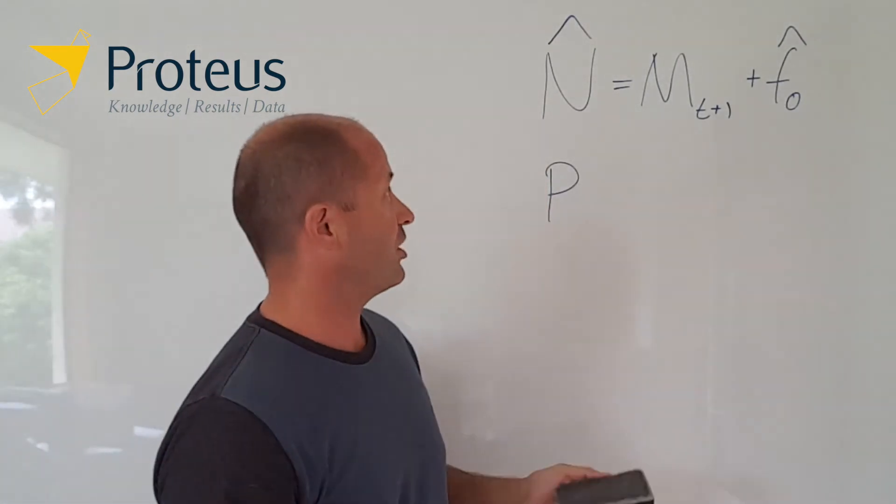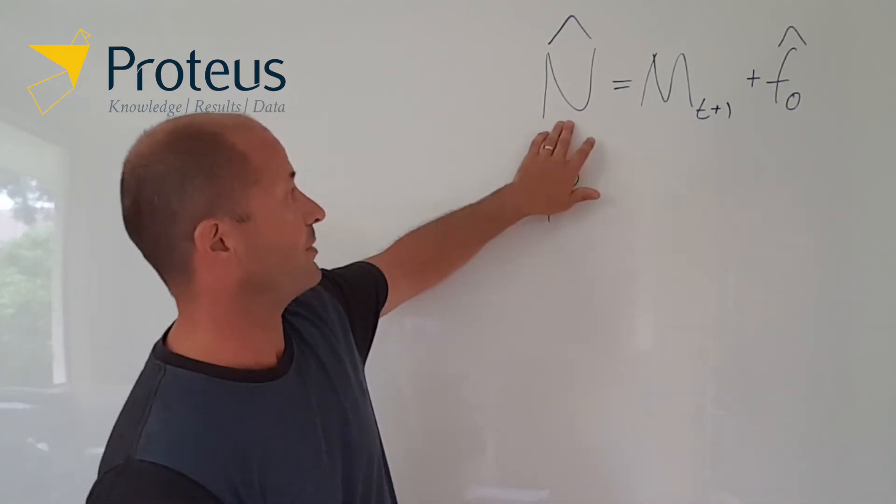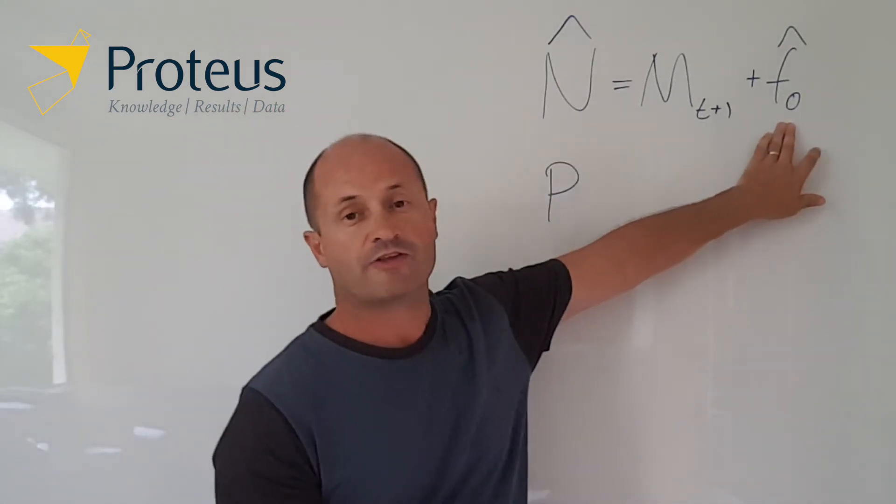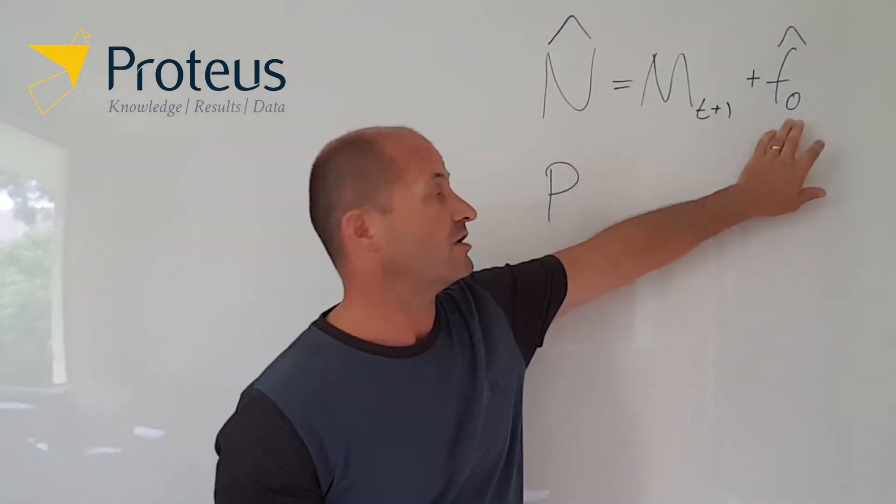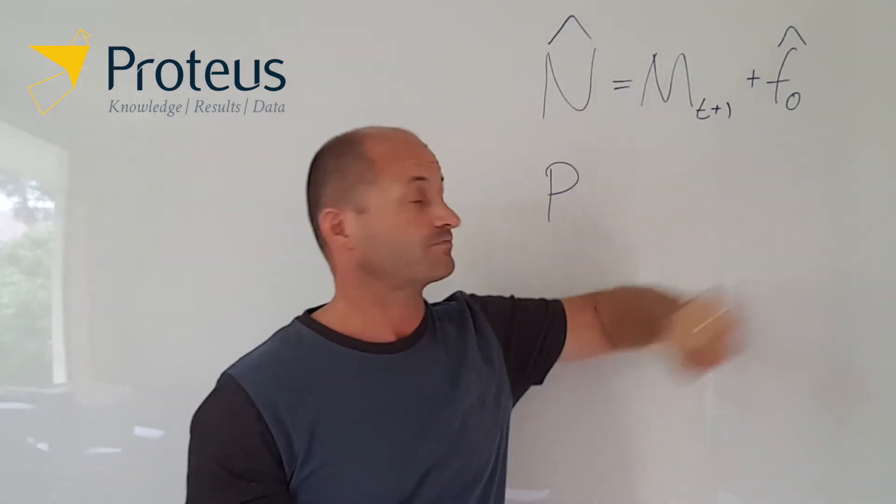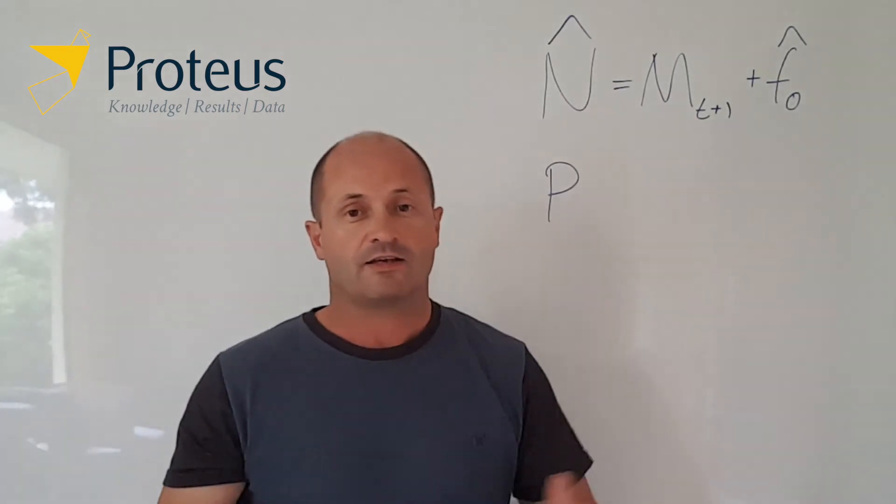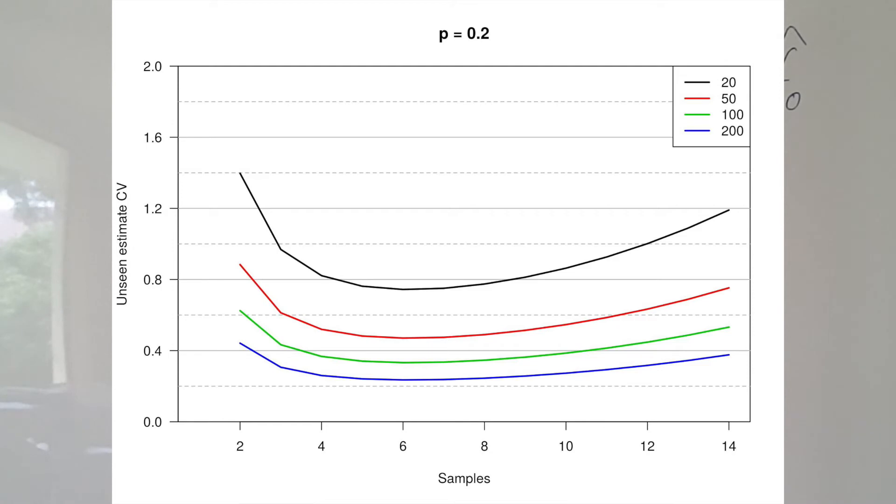So instead of talking about the coefficient of variation in population size, we could talk about the coefficient of variation for the number of unseen animals. And if we do that we get slightly different results. Here on the screen now we've got some more plots and this time these are plots of that coefficient of variation for the number of unseen individuals.